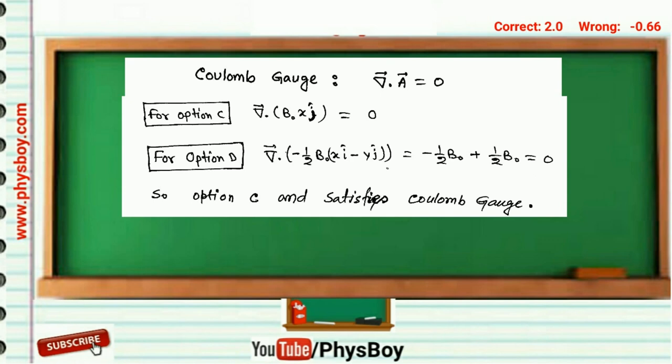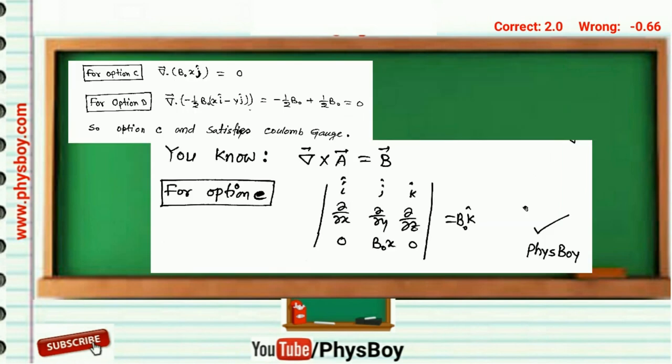Now we have to check which one of these two vector potentials will give the given magnetic field by calculating the curl of the vector potential. If you calculate the curl of the vector potential given in option C, you will get B_zero k cap, which is the given magnetic field.